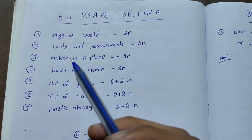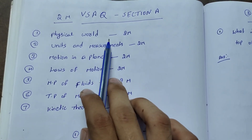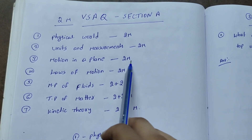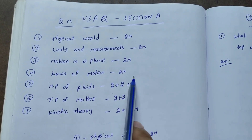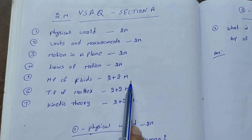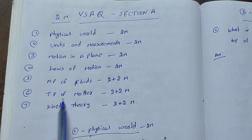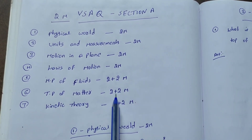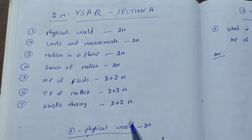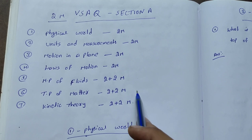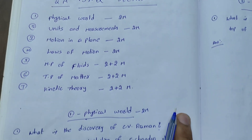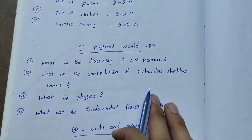First, I have two questions in AI lessons. This covers physical world, units and measurements, motion in a plane, and laws of motion — two marks each. Mechanical properties of fluids, two marks. Thermal properties of matter, two marks. Kinetic theory, two marks. So the last three lessons have two marks, two questions each. The first four lessons have two marks, one question each.